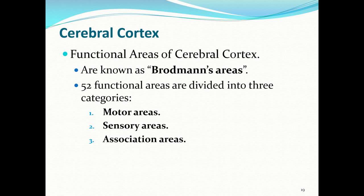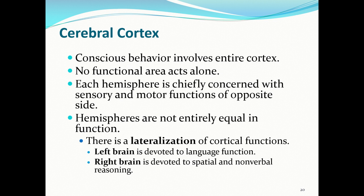The functional areas of the cerebral cortex are known as Brodmann's areas — there are 52 of them, divided into three major categories: motor areas, sensory areas, and association areas. Conscious behavior involves the entire cerebral cortex; no functional area acts alone. Each hemisphere is chiefly concerned with sensory and motor functions of the opposite side, and there is a lateralization of cortical functions: generally the left brain is devoted to language and the right brain to spatial and nonverbal reasoning.